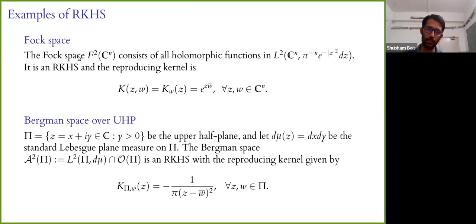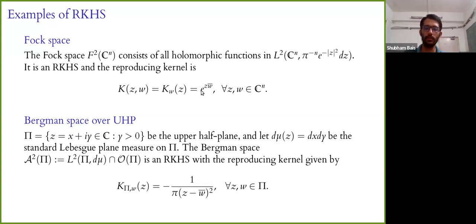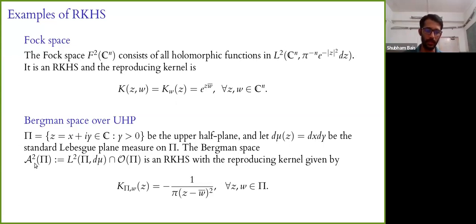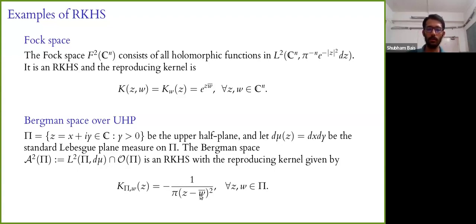For example, the Fock space F²(Cⁿ), consisting of all holomorphic functions in L², is a reproducing kernel Hilbert space with reproducing kernel e^{zw̄}. Similarly, the Bergman space A²(Π) over the upper half-plane Π, with the Lebesgue measure restricted to Π, is an RKHS with kernel of the form -1/(π(z - w̄)²).